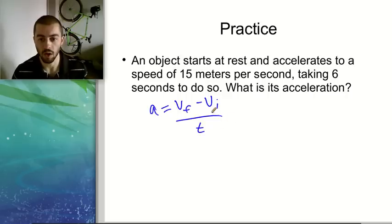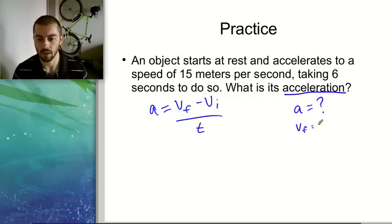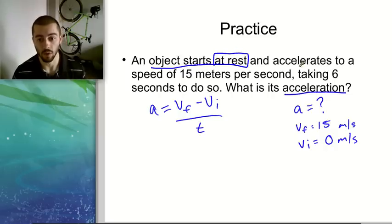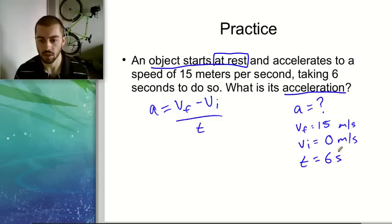So we're going to plug all of our information from the question in to calculate the acceleration. So we're looking for acceleration. That's our unknown. Our final velocity is 15 meters per second. Our initial velocity is 0 meters per second. So this is a little tricky. It didn't tell us that with a number directly in the question, but it says the object starts at rest. If it's at rest, that means it's not moving. It has a speed or velocity of 0. So our initial velocity there was 0, and then our time was 6 seconds.